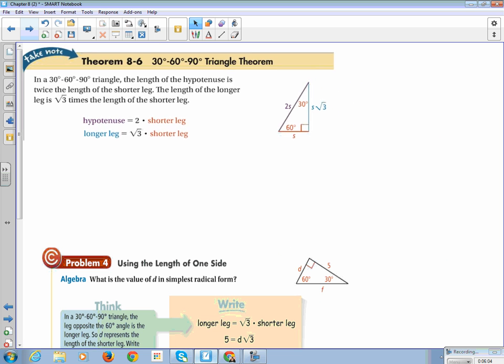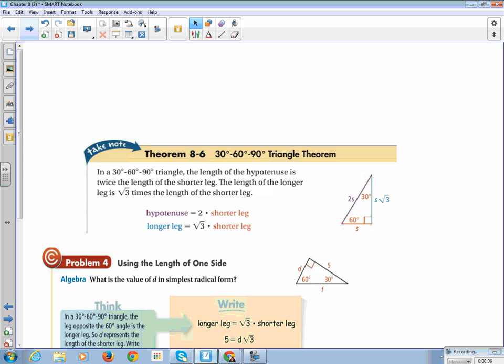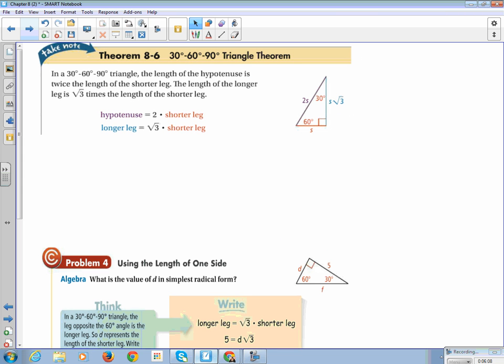All right, so the next scenario, that was 45, 45, 90. The next scenario we're going to discuss is the 30, 60, 90. All we're saying is that the angles inside the triangle are 30, 60, and 90.